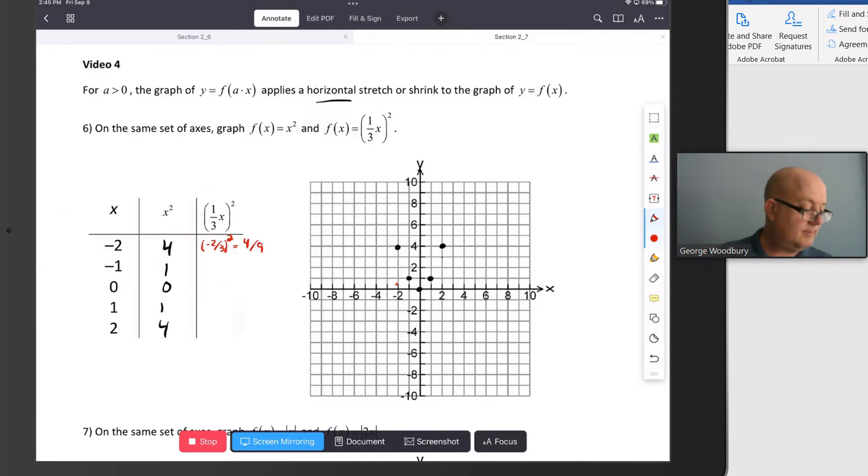So what I'd like to do instead is focus on the values where one-third x are the values negative two, negative one, zero, one, and two. So if one-third of x is negative two, that means that x is negative six. And when I put in negative six into this function, one-third of negative six is negative two. Negative two squared is four.